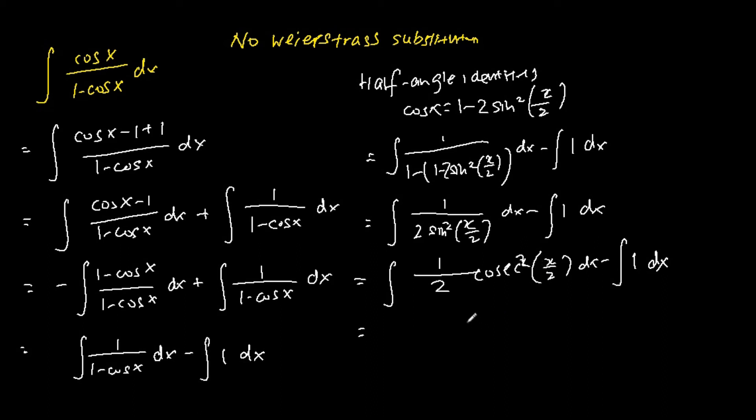So for the first term, the integral of half cosecant square x over 2 dx is the same as negative cotangent x over 2. Whereas for the second integral, the integral of 1 dx is x.